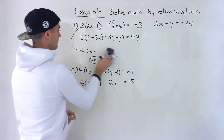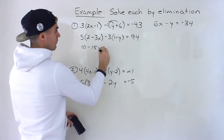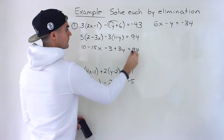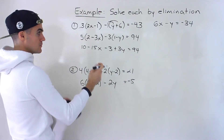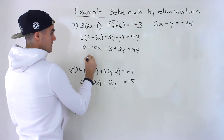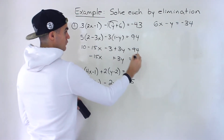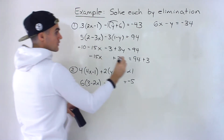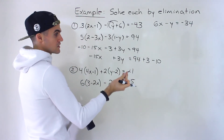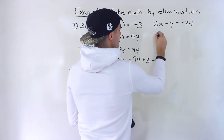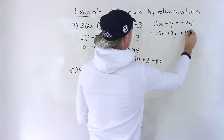Now what about this second one? Same thing. So we'll have 10 minus 15x minus 3 plus 3y equals 94. Negative 3 times 1 is negative 3. Negative 3 times negative y is positive 3y. So I'm going to keep all the x's on one side. We'll have negative 15x plus 3y. And then we'll have 94 — the negative 3 comes over, that becomes positive 3. The positive 10 comes over, that becomes negative 10. So we'd end up with 94 plus 3, which is 97 minus 10, which gives us 87. So we'd end up with negative 15x plus 3y equals 87.